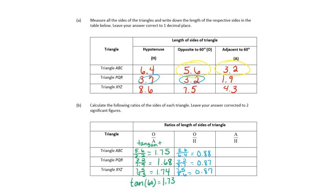Those ratios are all about the same — we're talking about similar shapes. Whenever we talk about opposite over hypotenuse, we call that the sine function, written as 'sin' in a calculator. The sine of 60 is 0.87, so those last two examples were right on. So if I have a 60-degree angle in a right triangle and divide my opposite side by my hypotenuse, I should get 0.87. If I change the angle, that ratio changes.